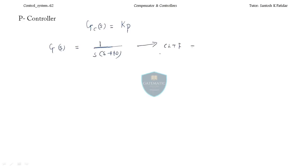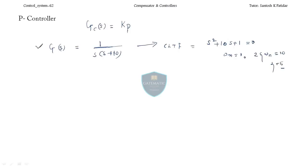Now let us find out the closed loop transfer function. I need the zeta and omega values only, so I will form the characteristic equation. It will be s² + 10s + 1 = 0. Just compare it. Omega_n is 1. If omega_n is 1, then 2·zeta·omega_n = 10, giving zeta = 5. This is an overdamped system, having zeta = 5 and omega_n = 1.